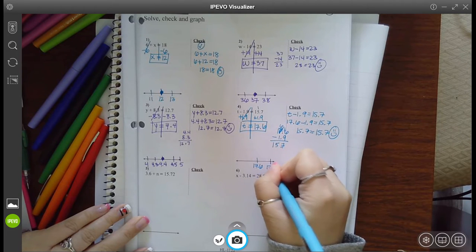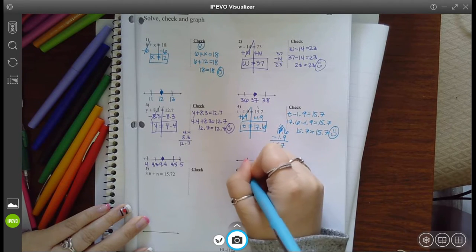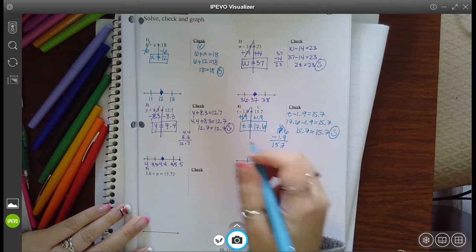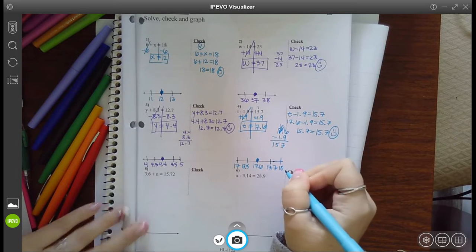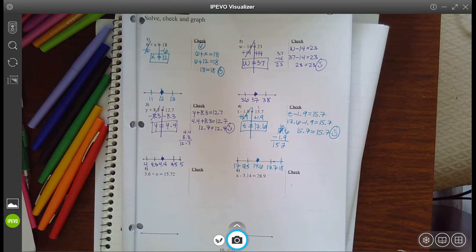And you could have put it between 17.7 and 17.5, or you could have said that 17.6 is between 17 and 18. And my next one.